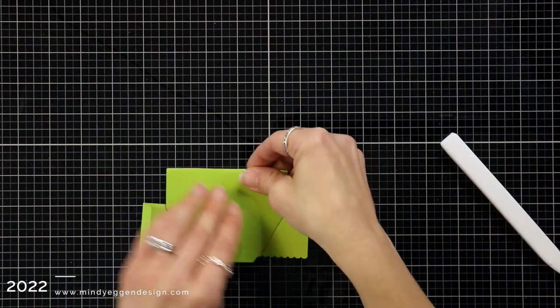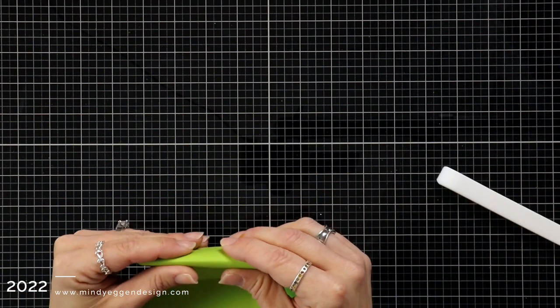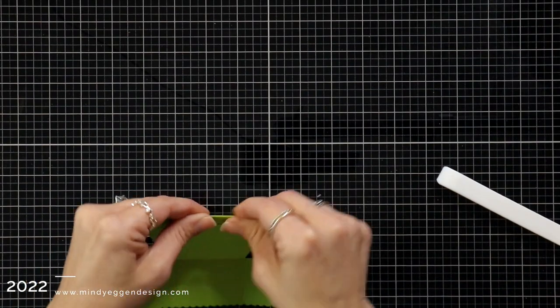It has these score lines on here, so I'm just going to go through, fold along all of the score lines, and reinforce that with my bone folder.